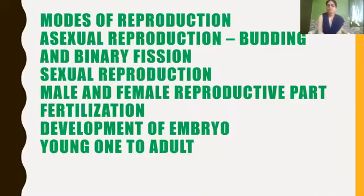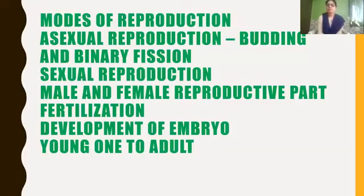In this chapter we will learn about modes of reproduction in animals — asexual reproduction, which includes budding and binary fission, and sexual reproduction in animals, which includes the male and female reproductive parts in human beings. We will then learn about fertilization, types of fertilization like external and internal fertilization, development of the embryo, and finally how the young one develops into an adult. These are all the topics we are going to cover in this chapter.